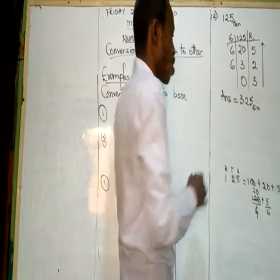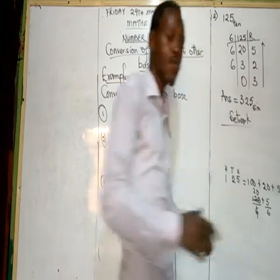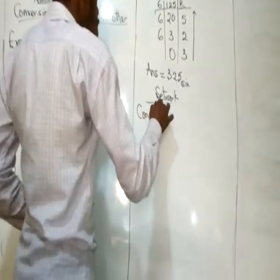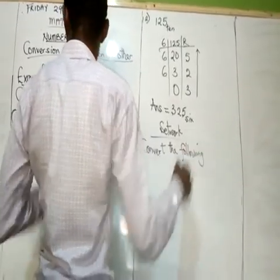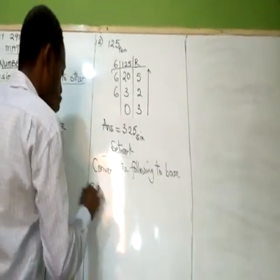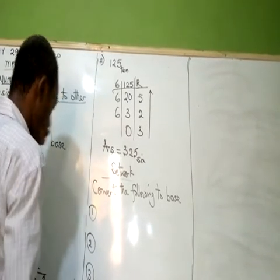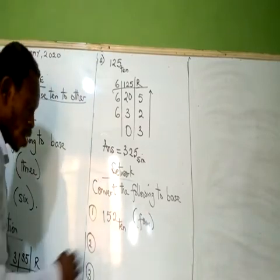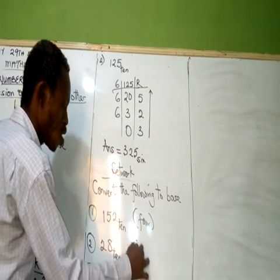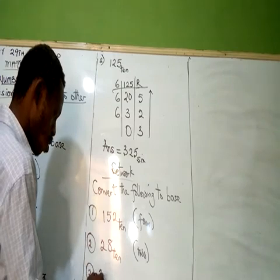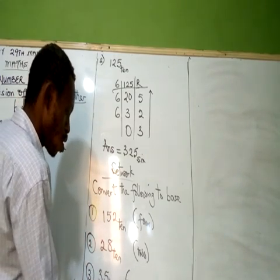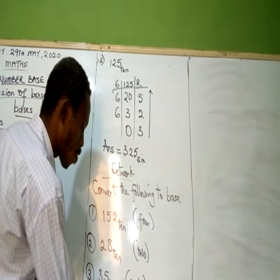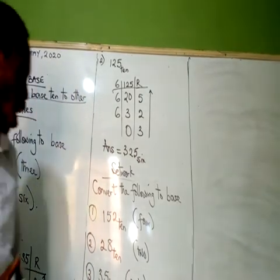Now I would like you to try this. Convert the following to the given bases. Number 1: convert to base 4. Number 2: convert 28 to base 2. Number 3: convert 35 to base 8. Number 4: convert 14 to base 5. Give this a try and let's see how far you understand the topic.